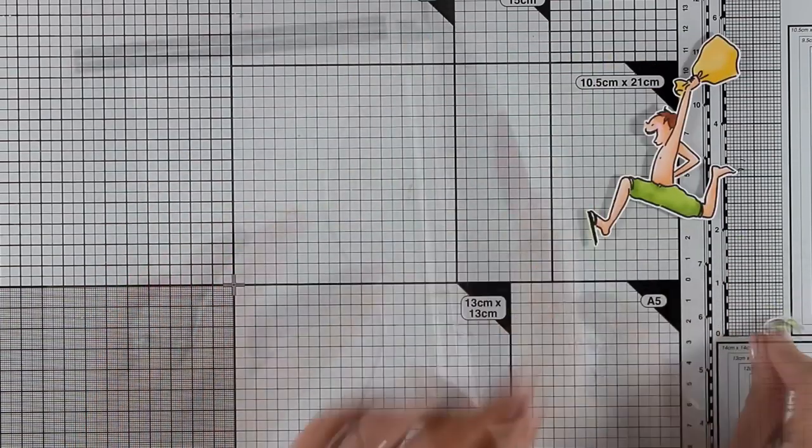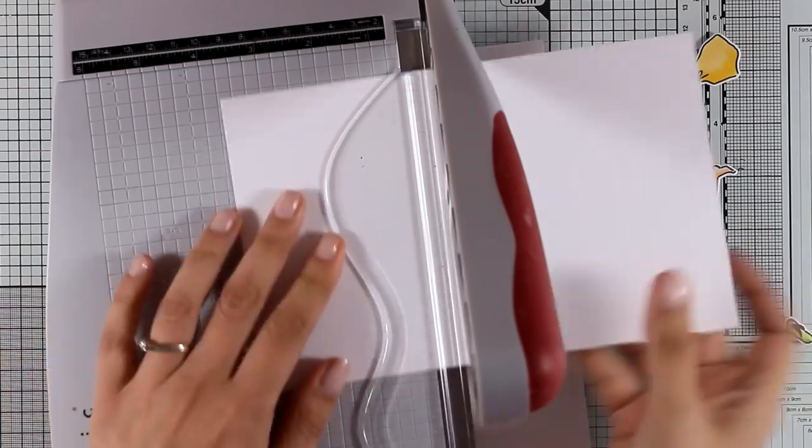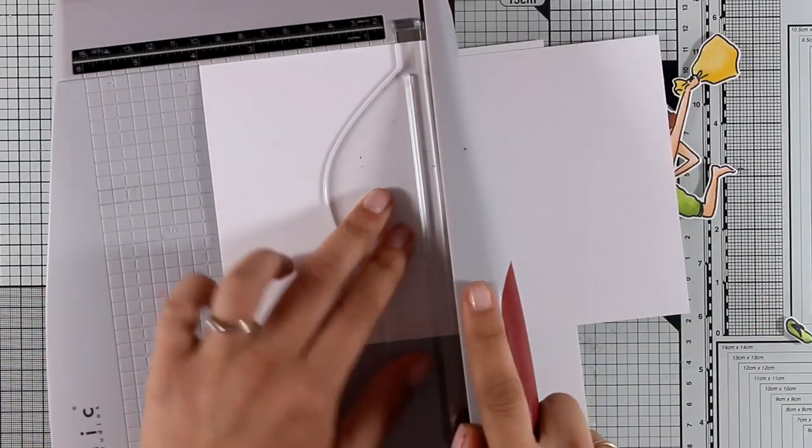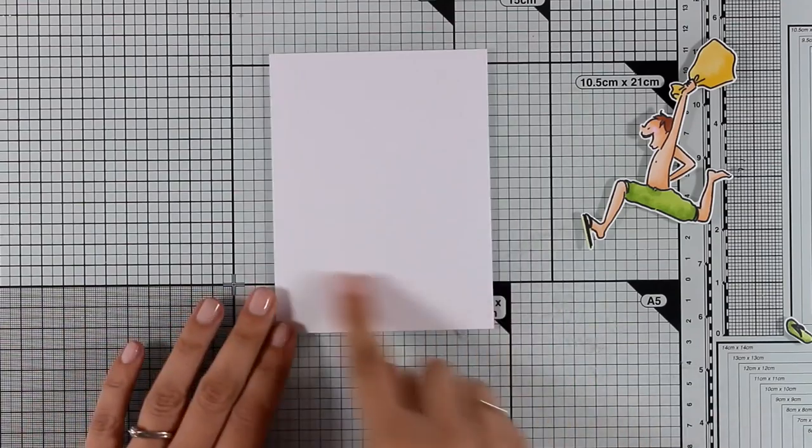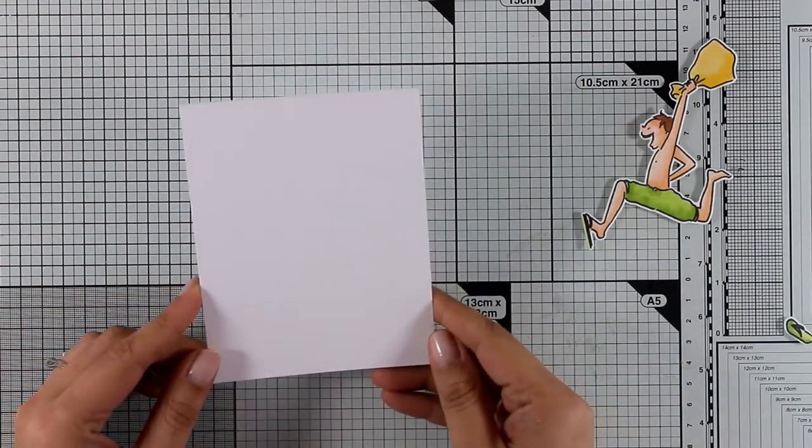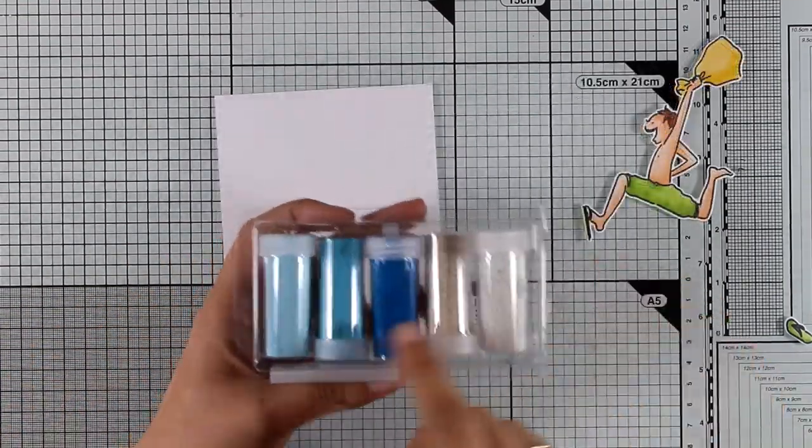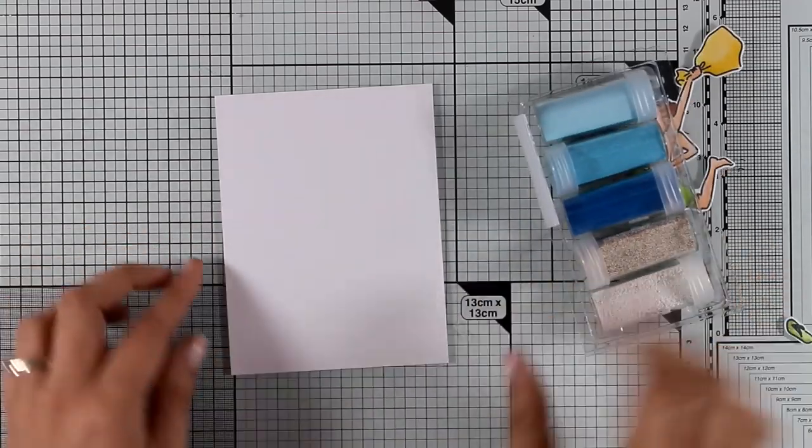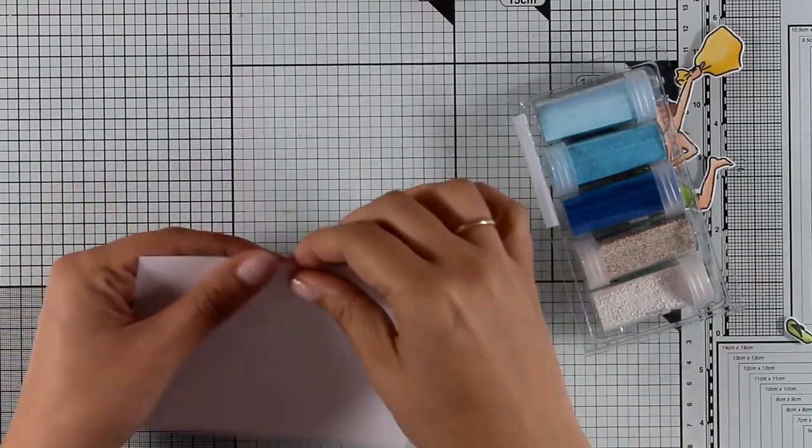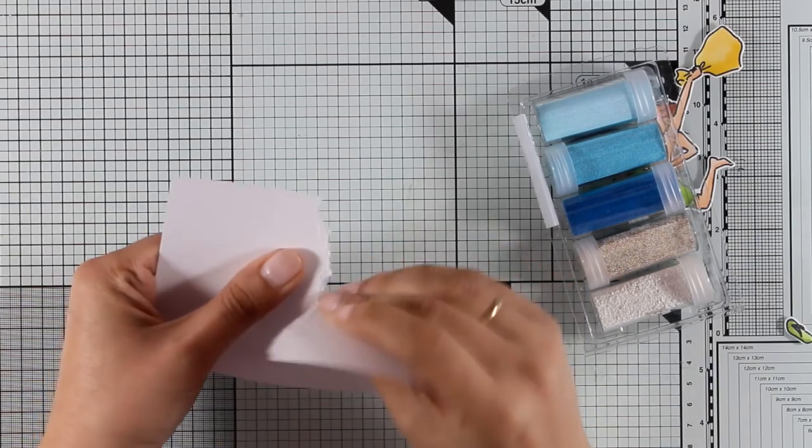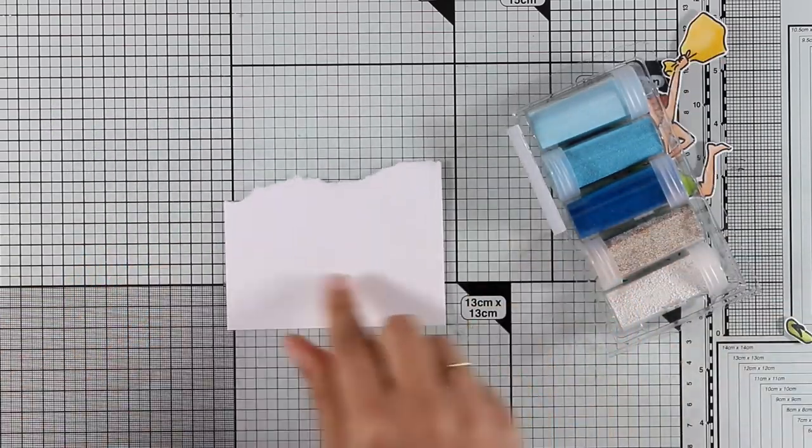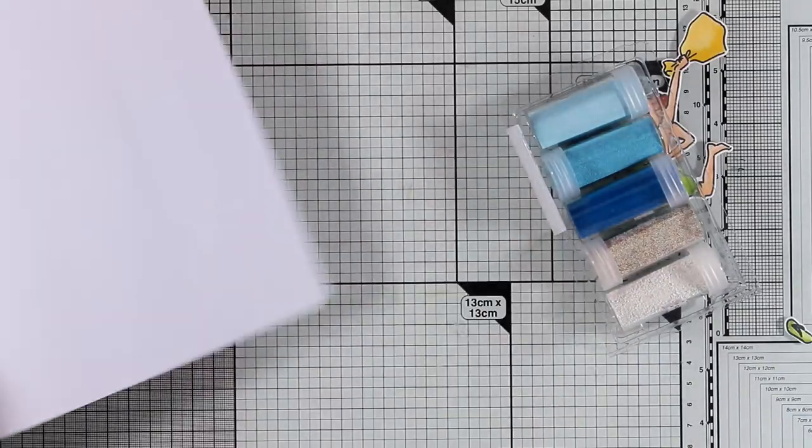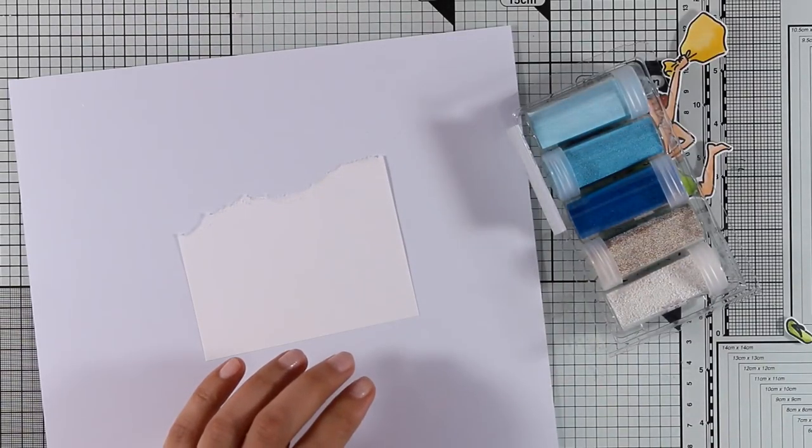I'm cutting out a piece of paper here - this is 4 by 5.25 inches, slightly smaller than standard card. I'm bringing in my embossing powders, a set by Stampendous that's absolutely perfect for creating sand and the sea. I'm going to show you how to do it. I'm going to tear this paper and bring in a scrap piece of paper.